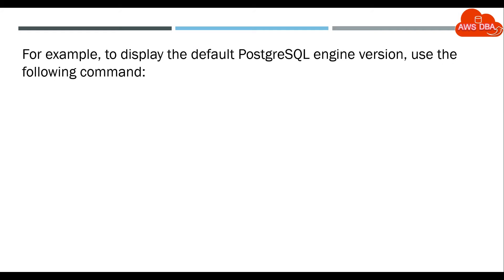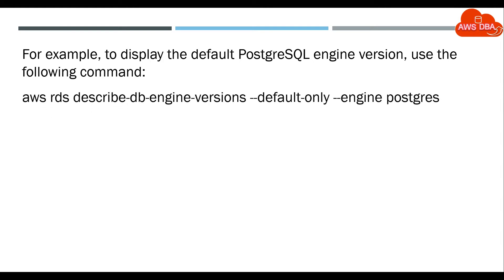For example, to display the default PostgreSQL engine version, use the following command: aws rds describe-db-engine-versions --default-only --engine postgres.